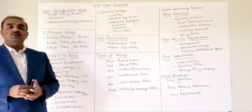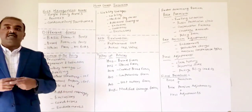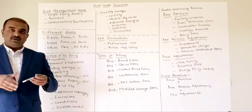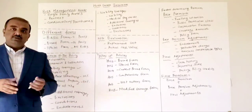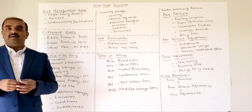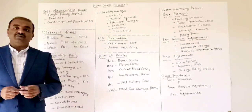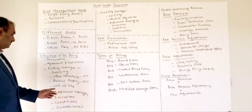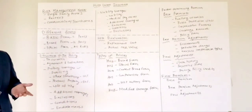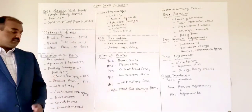Loss of use coverage applies when something happens to your home and the insurance company is working to rebuild it. During that time you need somewhere to stay — you may have to rent a home or stay in a hotel. Those costs are covered under loss of use. If you are not able to use your property, you can use this coverage for a temporary purpose.